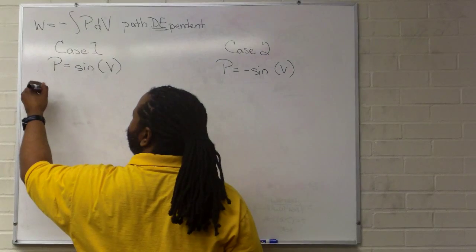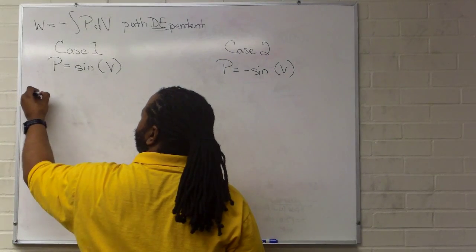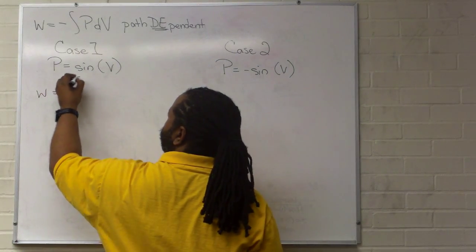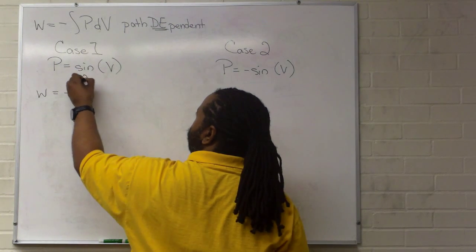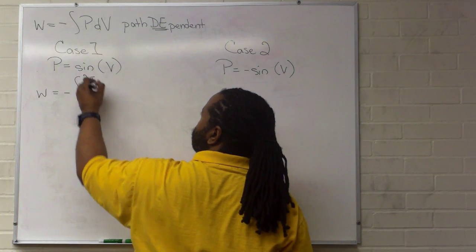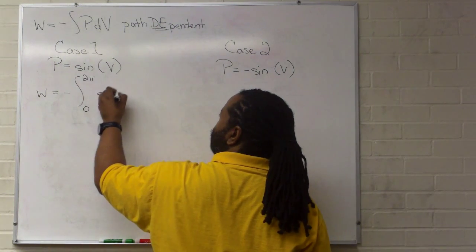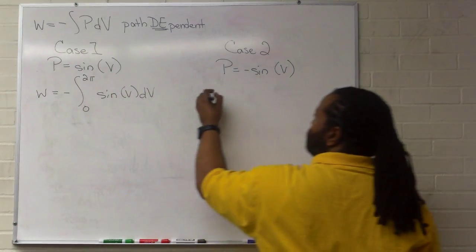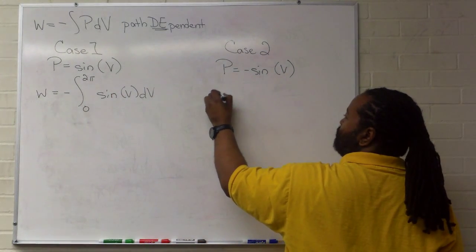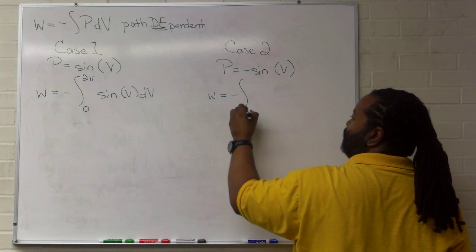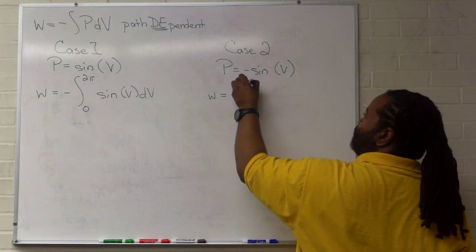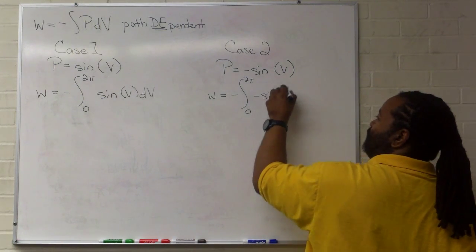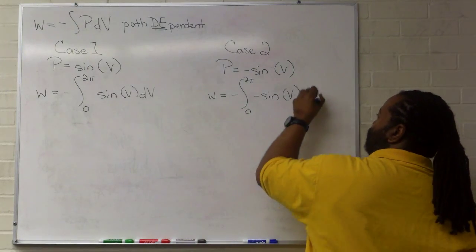So the work for case one will be the negative integral from zero to two pi of sine(V) dV. And for case two it's going to be the negative integral from zero to two pi of negative sine(V) dV.